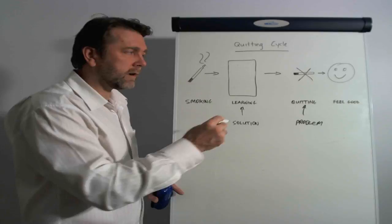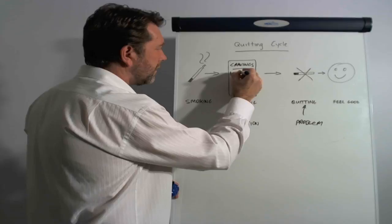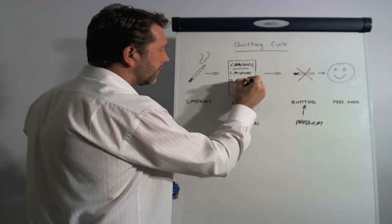So we started to learn about the cravings. And of course there's two types of cravings: the first one is physical cravings, and the second one is mental cravings.